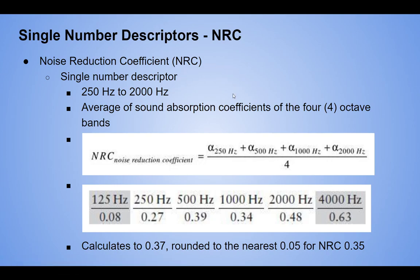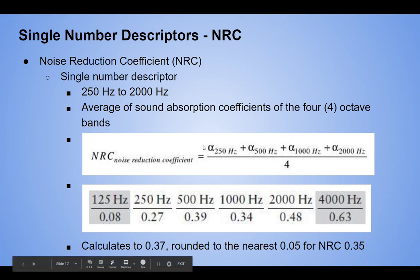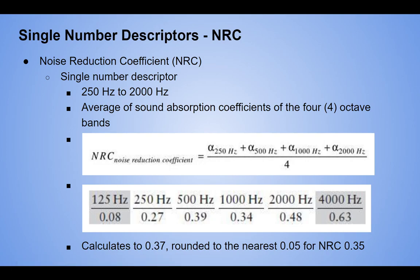These numbers are helpful as starting points, but be mindful of their limitations. When you get to Architecture 520 or 521, we'll really look at this in depth. When picking finishes for an acoustically sensitive space — not corridors, bathrooms, or storage rooms, but video conferencing rooms, classrooms, music performance spaces, recording studios — single number descriptors are good starting points, not final design tools. For hallways and bathrooms where you just want to knock down a little background noise, these are beneficial. That's single number descriptors — we'll move on to the next topic.